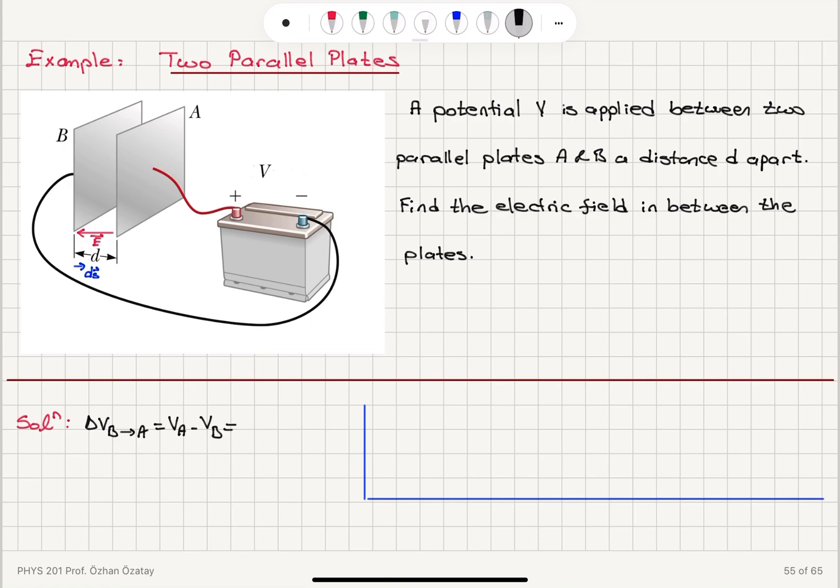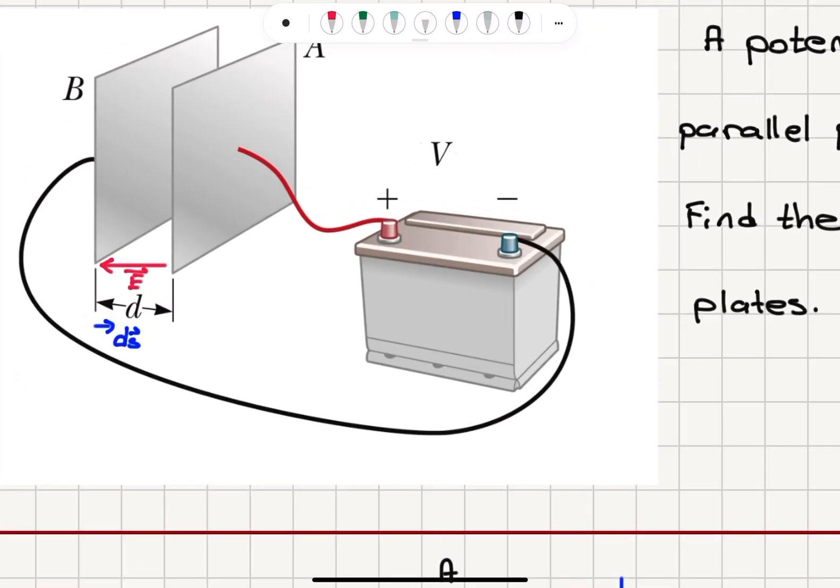This is minus the integral from B to A, E dot dS. So that's our path integral. So electric field points from A towards B and we're going from B to A.